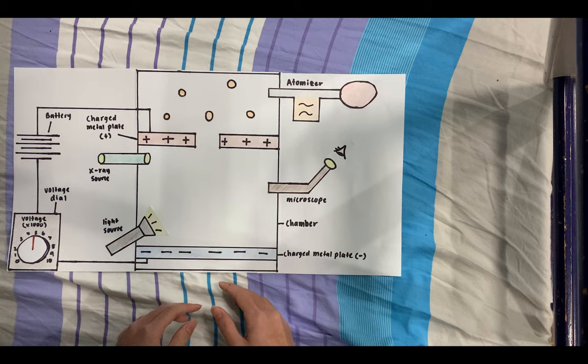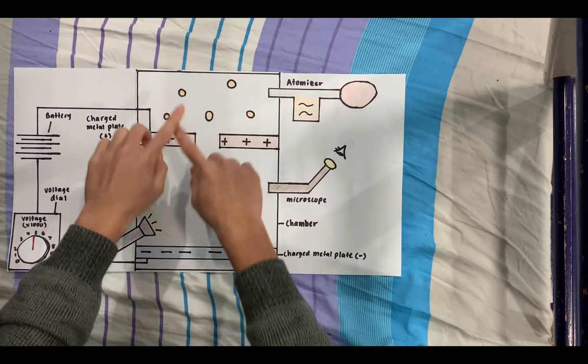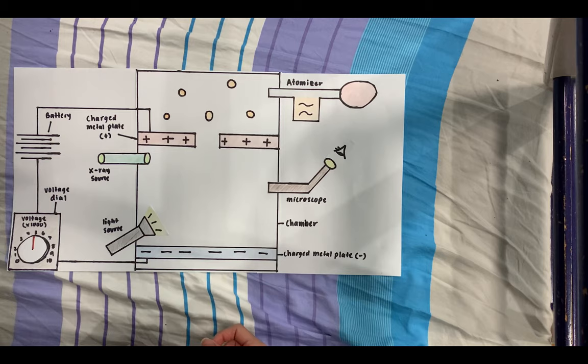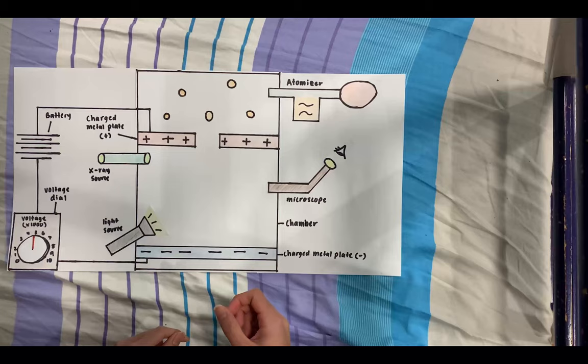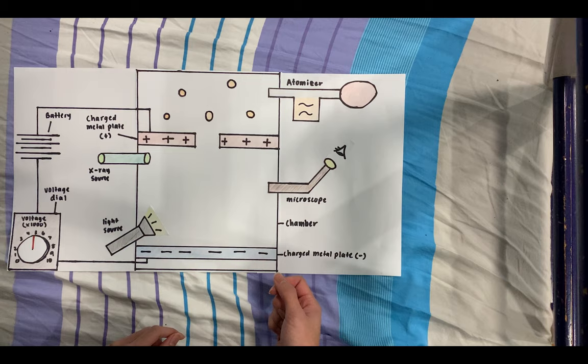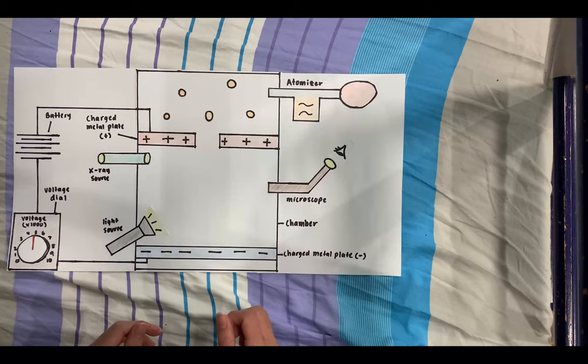Let's talk about the equipment Millikan and Fletcher used. There's a big chamber shown here in cross section. Up here is the atomizer, like a perfume mist that squirts little droplets of oil into this area. They chose to use oil because they needed a liquid droplet that could retain its mass and spherical shape throughout the experiment in order to do their calculations reliably. They used a very specific type of oil which has extremely low vapor pressure so it doesn't evaporate as much as other oils.